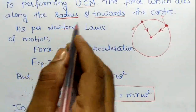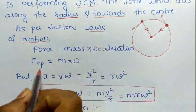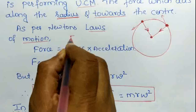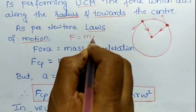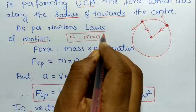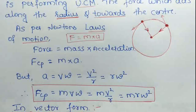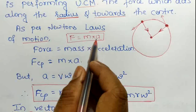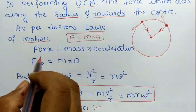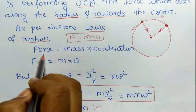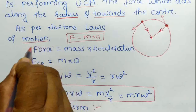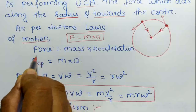As per Newton's laws of motion, force is equal to mass into acceleration — F = ma. This is Newton's second law of motion. We will consider this force as the centripetal force, denoted FCP, where CP indicates centripetal.